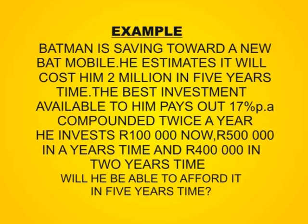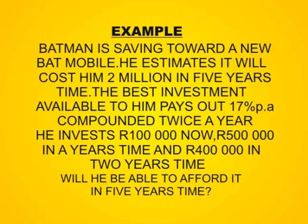What we're going to do is we're going to look through two different techniques of using the timeline and let us see what the amount will be at the end of 5 years and whether he will be able to afford it. What I'm going to do is I'm going to start by taking the information from the question and I'm going to put it onto a timeline.